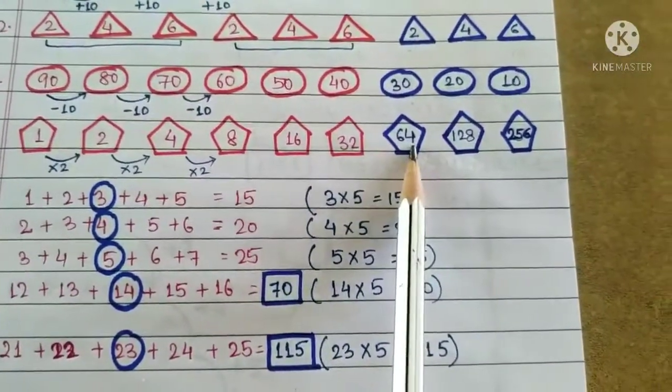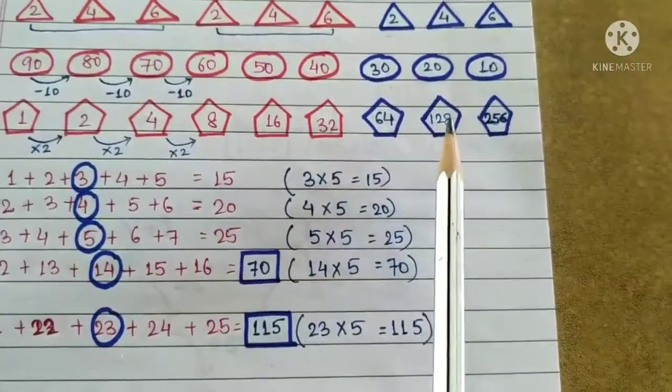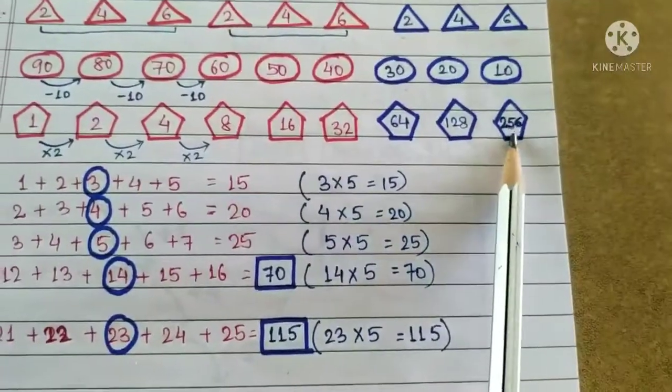So 32 into 2 is 64. 64 into 2 is 128. 128 into 2 is 256.